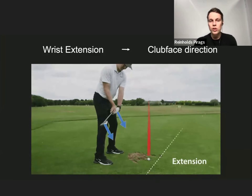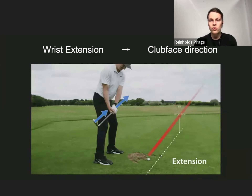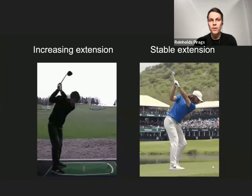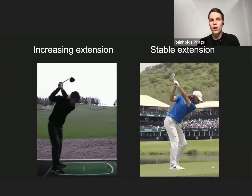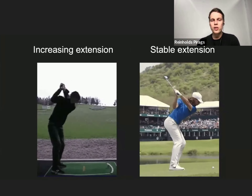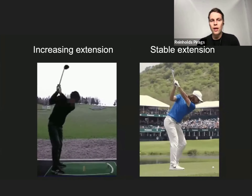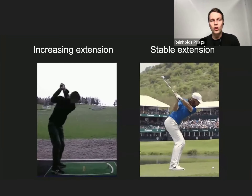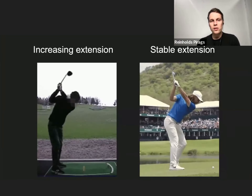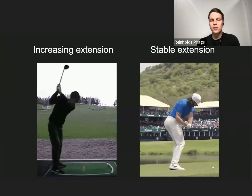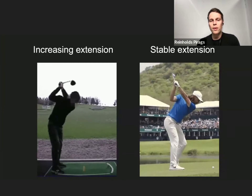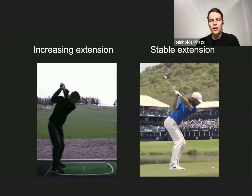This is very important for players to learn clubface control and awareness. Most amateurs don't have this awareness and have very unstable extension amounts. On the left, you can see a typical amateur pattern for a slicer — going to the top and pulling down with the hands, opening the clubface. It becomes very difficult to control, resulting in an out-to-in path with an open clubface and a slice.